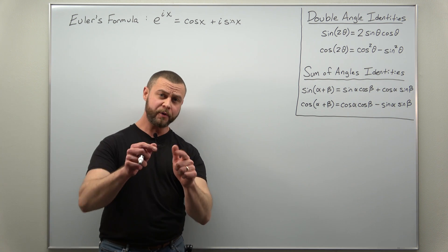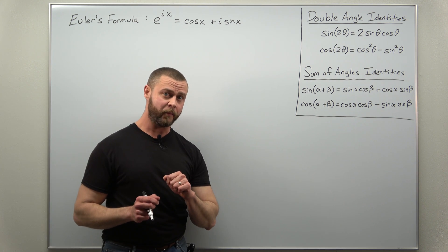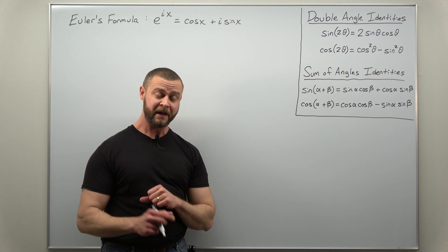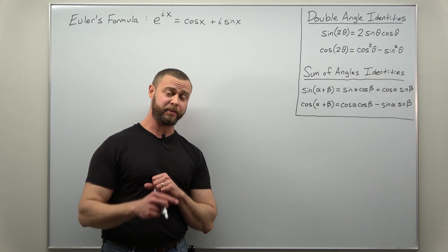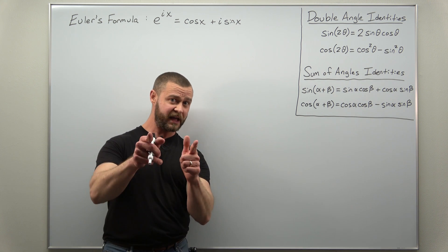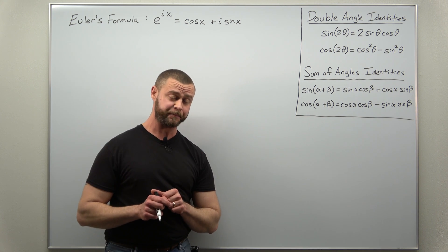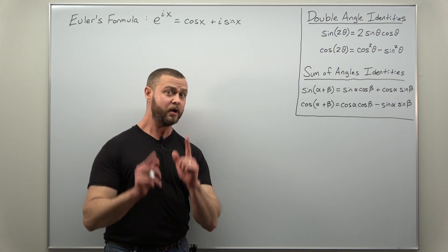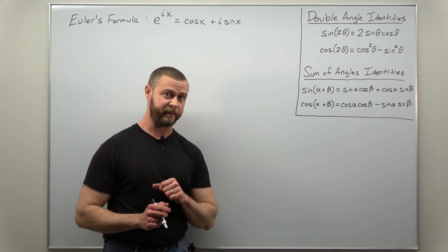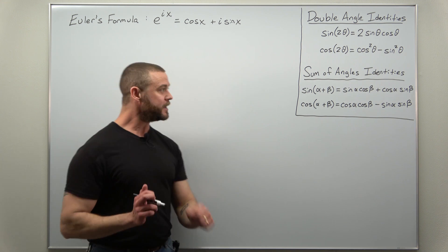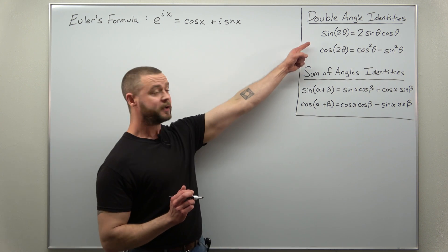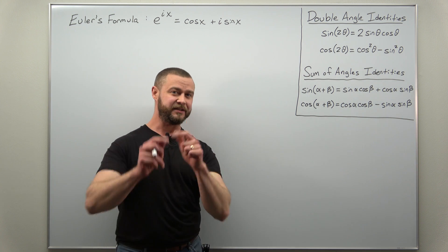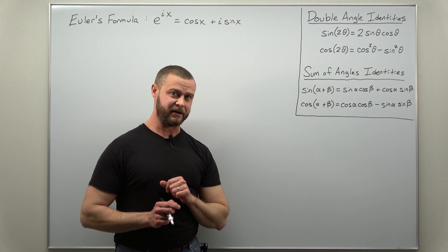Before you go through this video, make sure you're comfortable with Euler's formula — I have a link down below to a video on that so check that out. If you are comfortable with Euler's formula, let's go ahead and immediately apply it to deriving first the double angle identities.